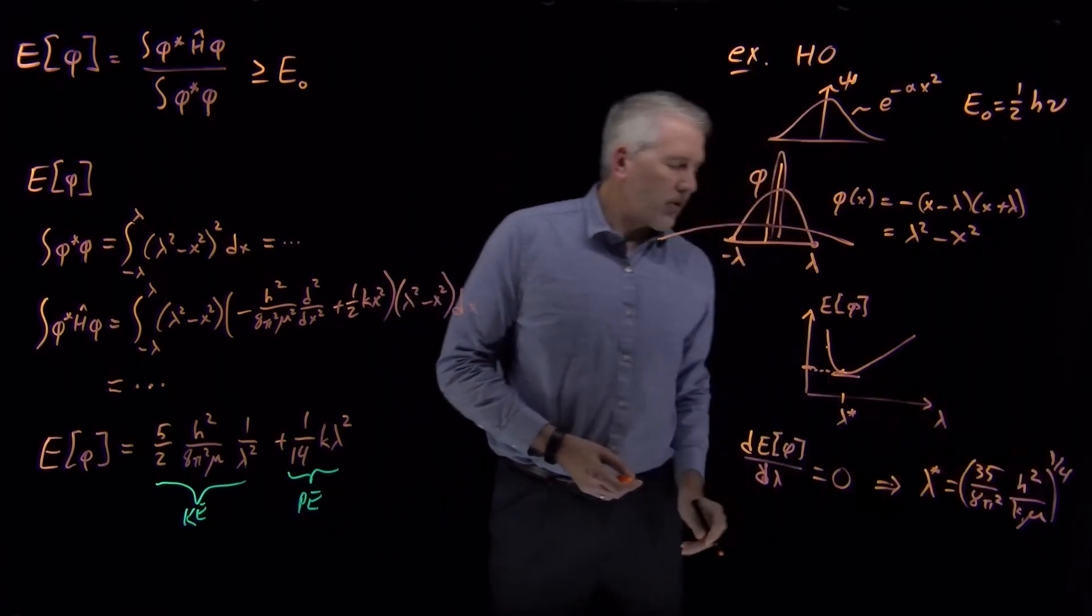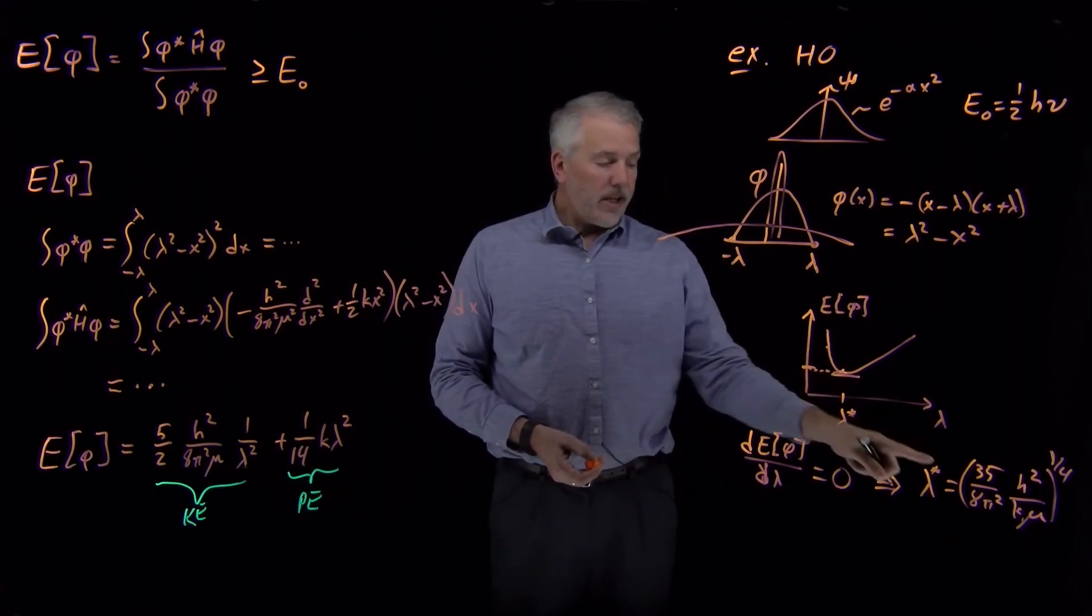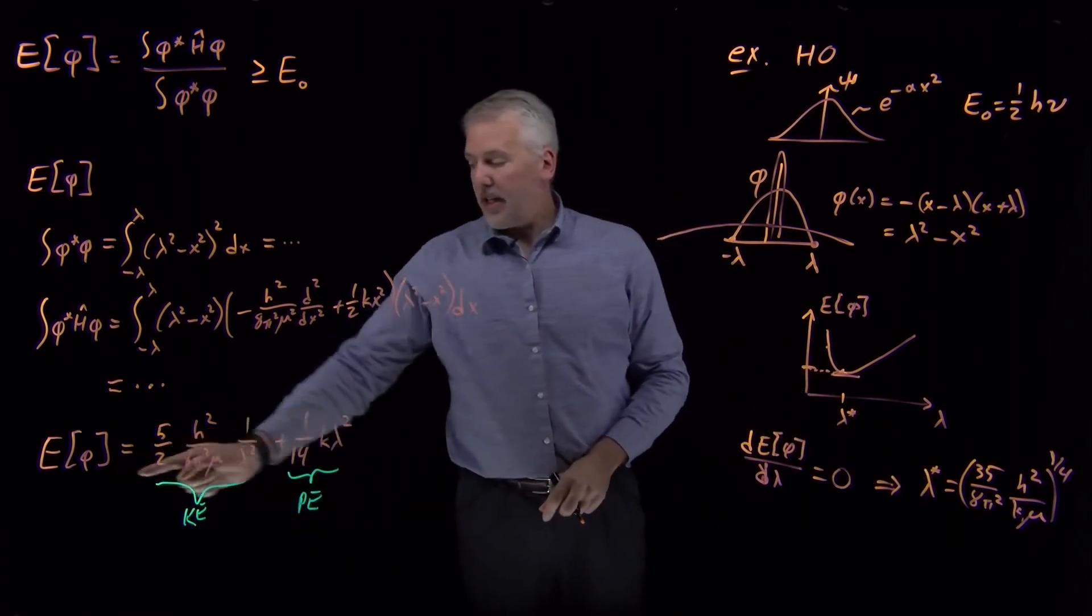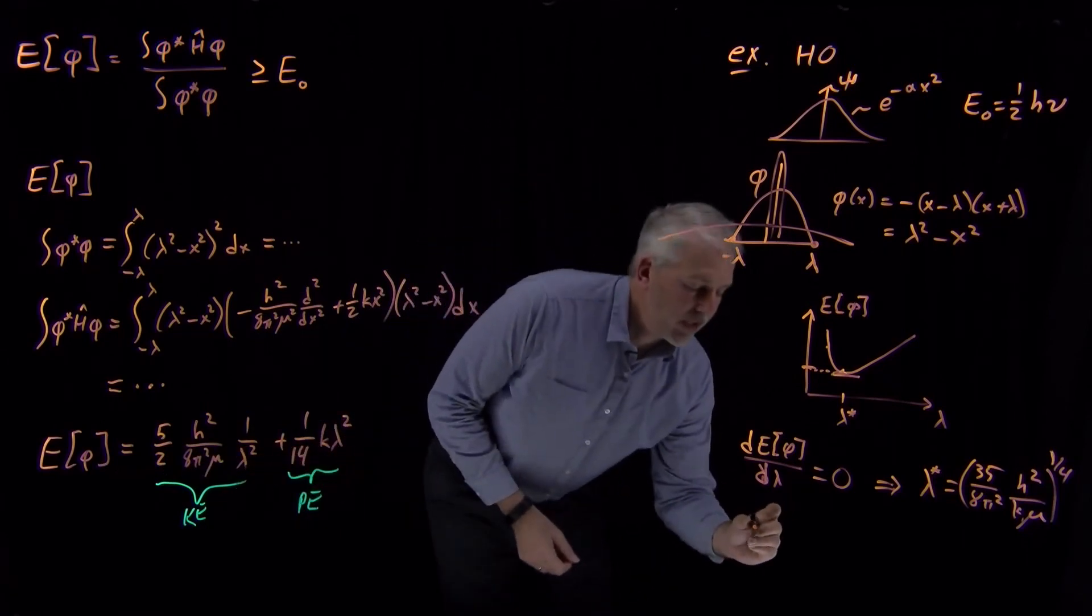That particular collection of constants, some numbers and constants raised to the one-fourth power. But then, if I take that value of lambda, plug it back into the expression for my variational energy, what I find is that the energy, that lowest possible value...